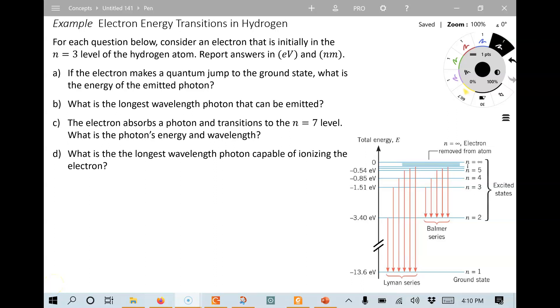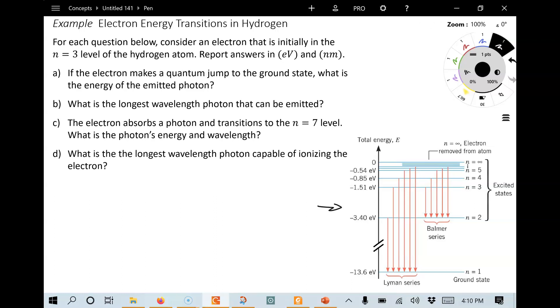This is an example problem on electron energy transition in hydrogen. So in this problem, we are going to be using the Bohr model, which has the energy level diagram for hydrogen seen right over here, to be able to solve all of these questions.